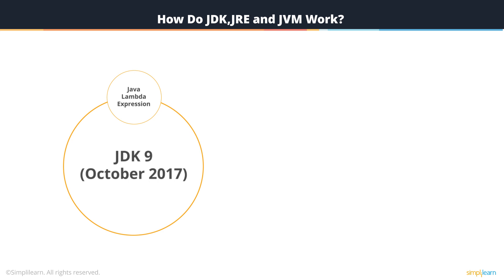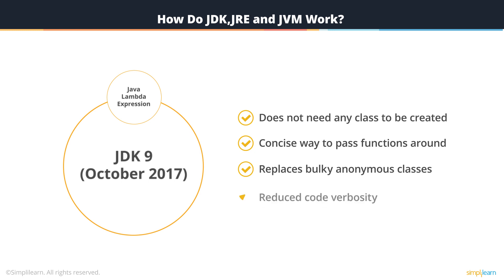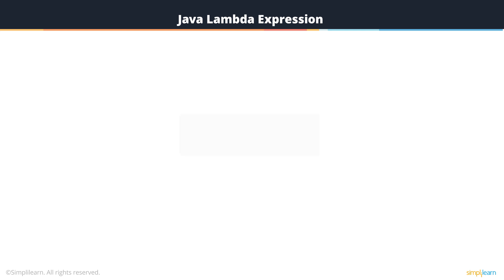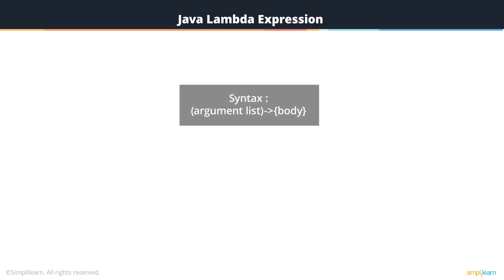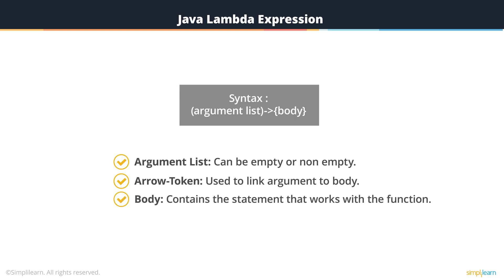Java Lambda Expression is a kind of function which does not need any class to be created. It has been included in the latest version of JDK as it provides a clear, concise way to pass functions around. This also replaces earlier, bulky, anonymous classes and reduces code verbosity, that is, the length of the code. The syntax for the Lambda Expression is: ArgumentList, ArrowToken, Body. The syntax consists of three components: ArgumentList, which can be empty or non-empty; the ArrowToken, which is used to link argument to body; and finally, Body, which contains the statement that works with the function.